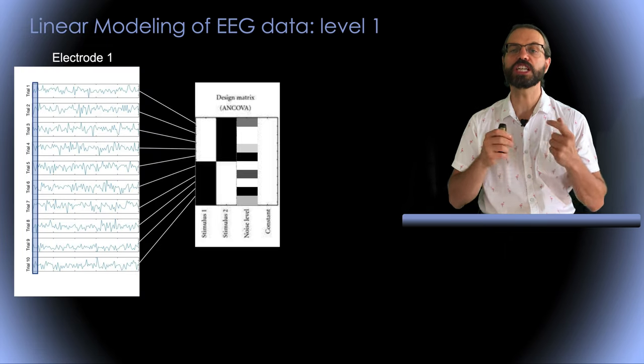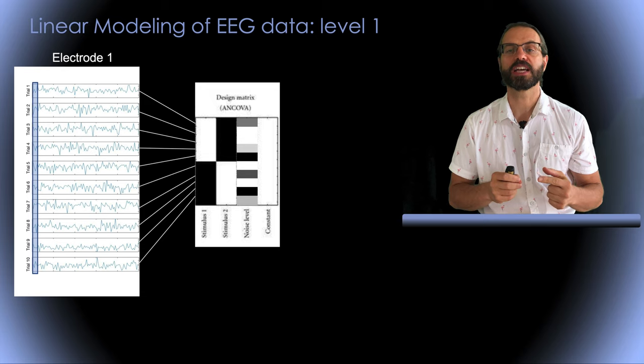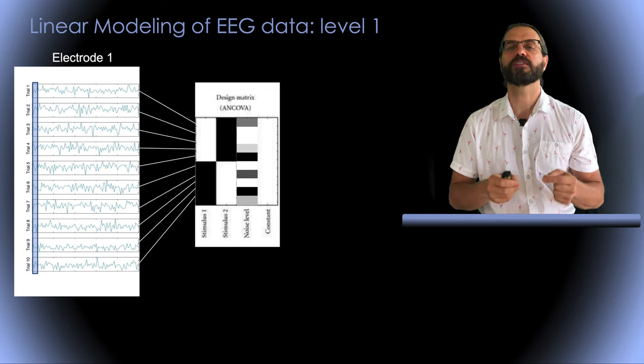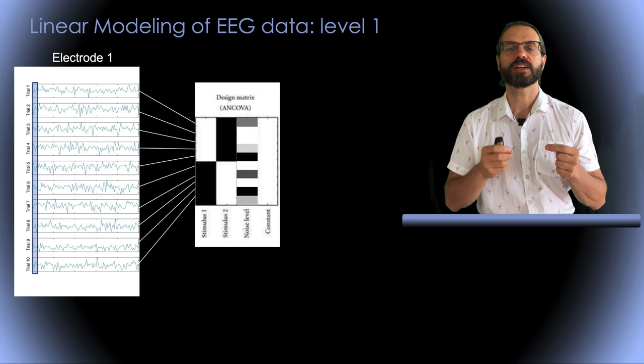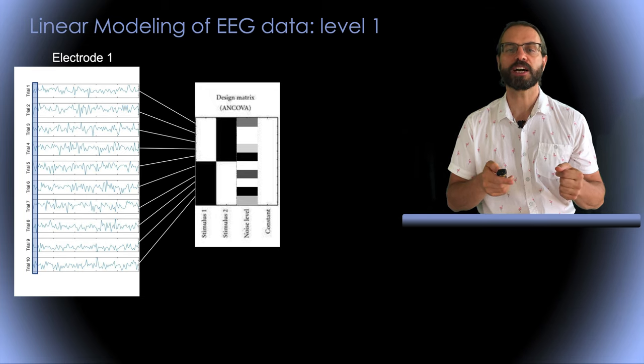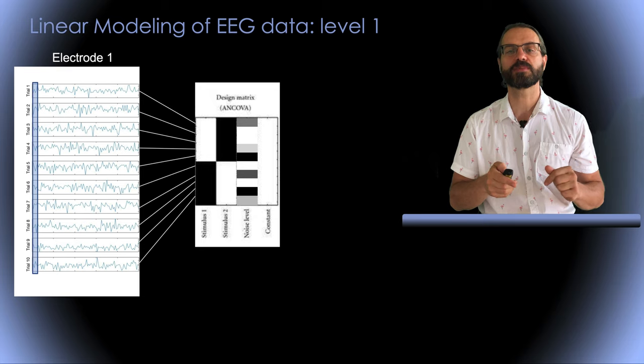Now let's move to EEG and ERP processing. Let's first look at a single electrode and focus on the first sample of multiple trials. Each trial has a corresponding row in the design matrix. Here we have two categories of stimuli and a continuous parameter which is the noise in the stimulus.